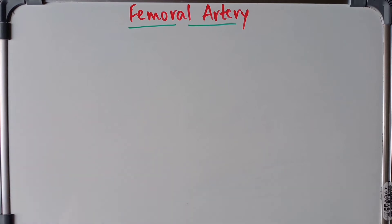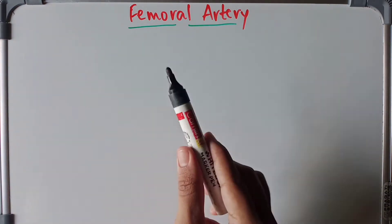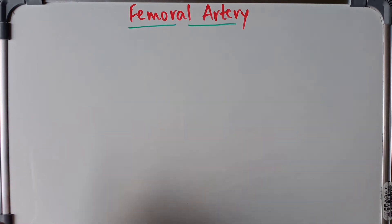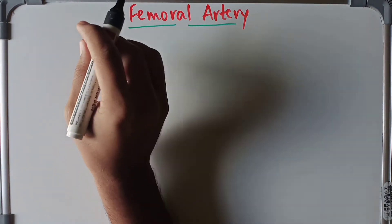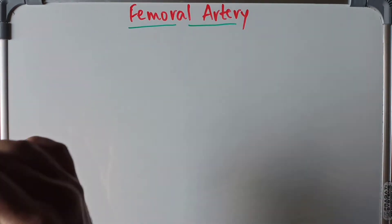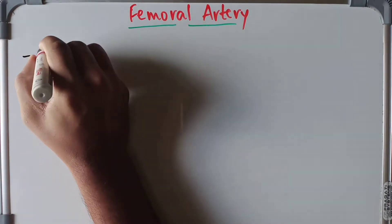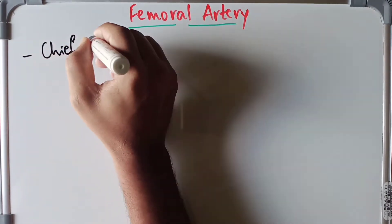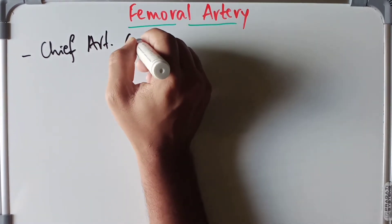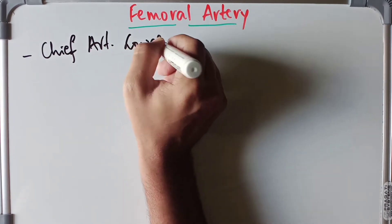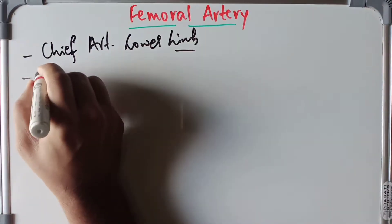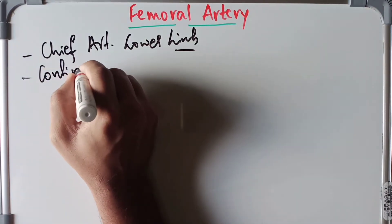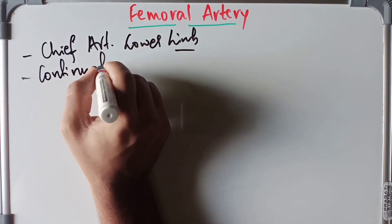Welcome back. Today we are going to discuss the anatomy of the femoral artery as well as the femoral vein. The femoral artery is the chief artery of the lower limb because it is a continuation of the external iliac artery — it supplies the lower limb, which is why it's called the chief artery of the lower limb.